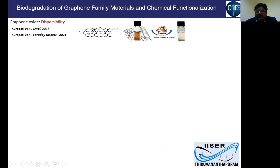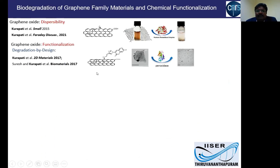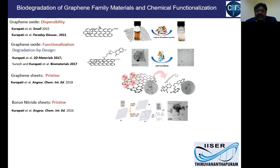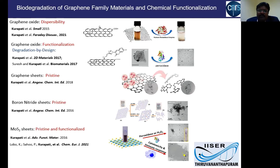We studied the dispersibility-dependent degradation of graphene oxide by myeloperoxidase using three types of graphene oxide: GO1 from the Hummers method; GO2 and GO3 from two Spanish companies — Antolín and Nano-Indoa — as part of a collaboration. GO2 was stable for up to 24 hours before settling, while GO3 from Nano-Indoa aggregated to the bottom within five minutes.